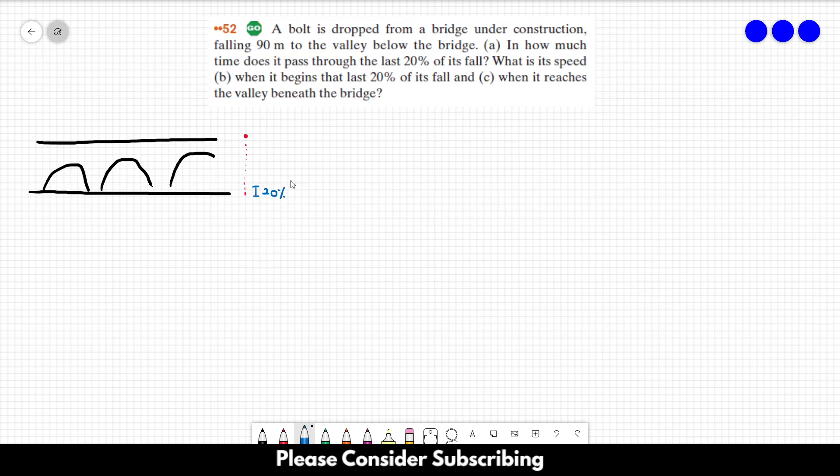We want to calculate the time that it took to travel the first 80%. And then we will calculate the time it took to do 100% of the trajectory. And then we just make the difference. That's what we will do here.